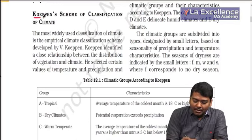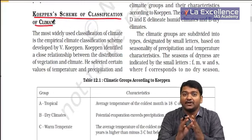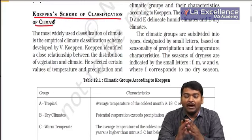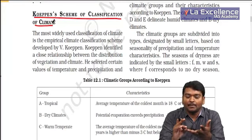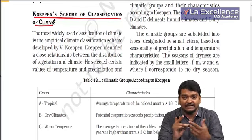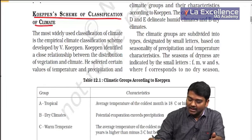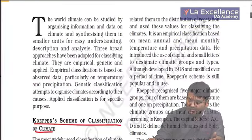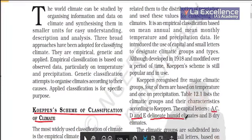Let us look at the Koppen scheme of classification. This particular person tries to classify the world alphabetically on the basis of temperature, precipitation, and climatic conditions. The very first important thing about his classification is that A, C, D, and E delineate humid climates.